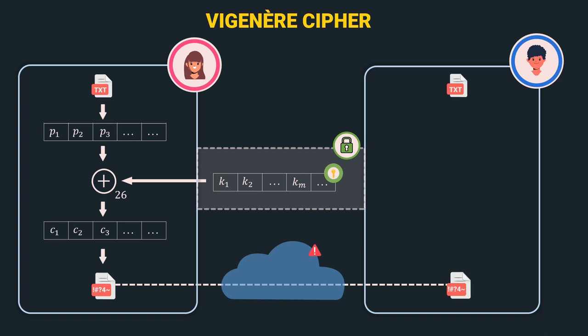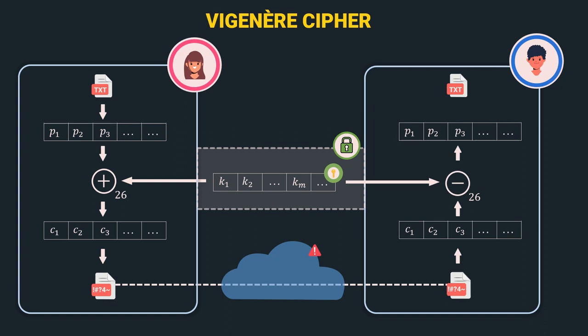Bob has the cipher text and represents it as a stream of characters c1, c2, c3, and so on. Bob then takes the cipher text stream and the key stream and applies a bitwise negation operation to generate the plain text, represented by p1, p2, p3, and so on. In this way, Bob retrieves the plain text.